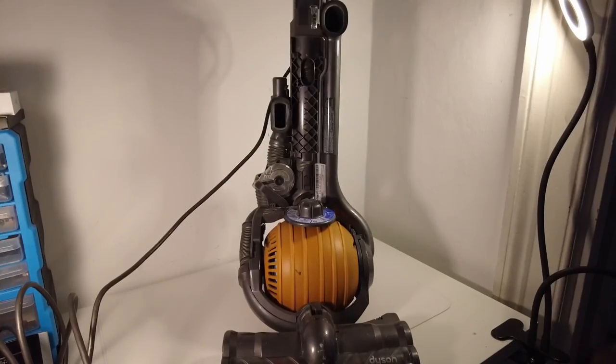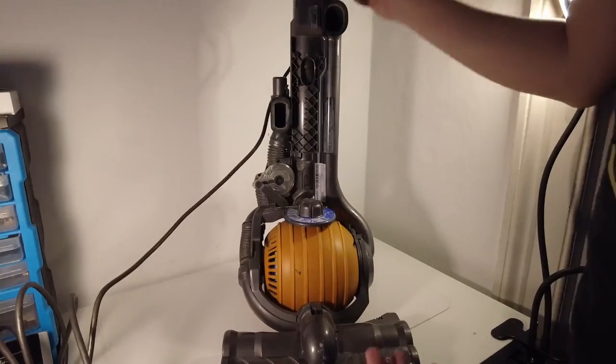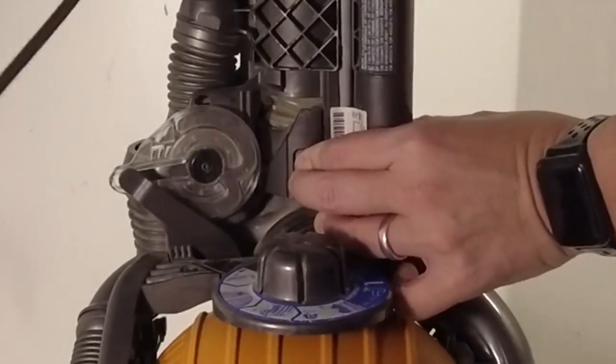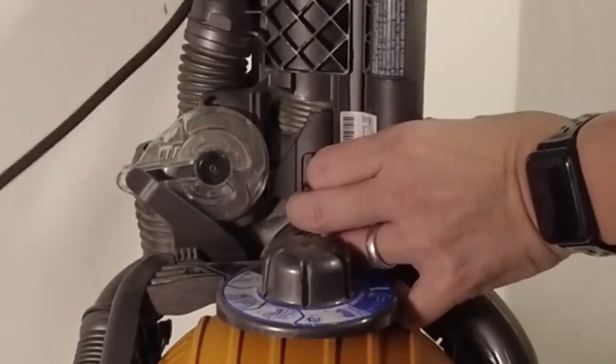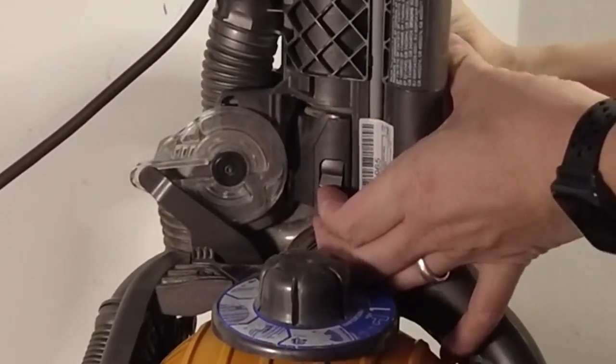Now we're going to see if there's any kind of obstructions in the hose itself because the obstruction is probably something with the hose that's wrong. So basically I'm going to press this button and then this whole section just lifts out.